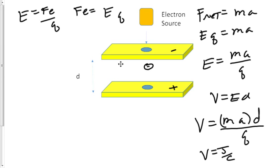So then we can figure out what the voltage is between the plates or the potential difference based on the acceleration of the electrons.